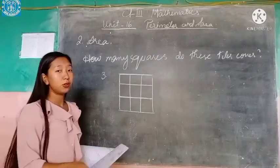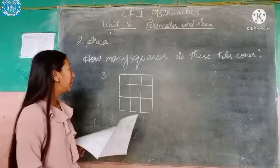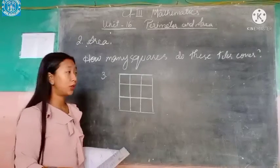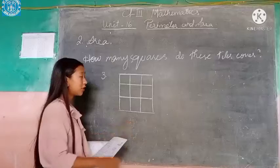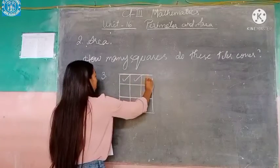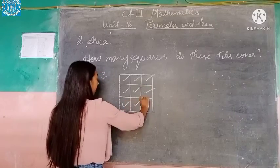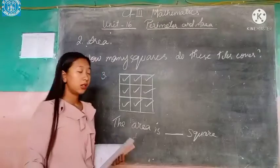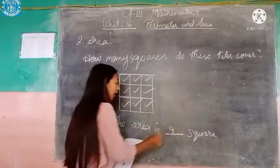Now let's do the first exercise. So how many squares do these tiles cover? We have 1, 2, 3, 4, 5, 6, 7, 8, 9. There are 9 squares, so you will write here that the area is 9 squares.